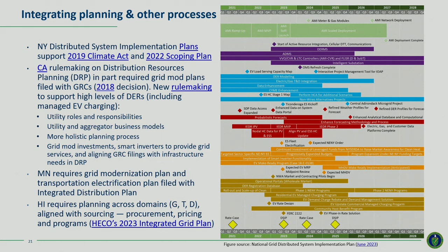Other examples of coordinated planning include California, which has a rulemaking to modernize the grid for a high distributed resource future with a more holistic process replacing the existing distribution planning process. Minnesota now requires grid modernization plans and transportation electrification plans to be filed with the utility's integrated distribution plan. In Hawaii, they require planning across the electricity system — across generation, transmission, and distribution — and they're aligning planning very closely with procurement to follow, through solicitations, pricing, and programs.